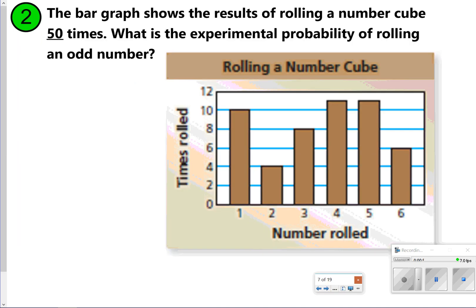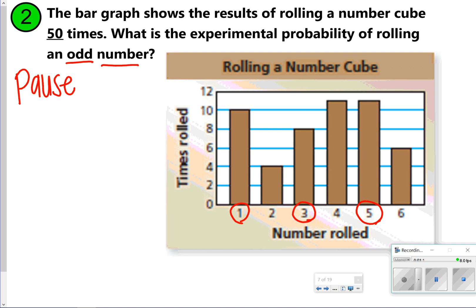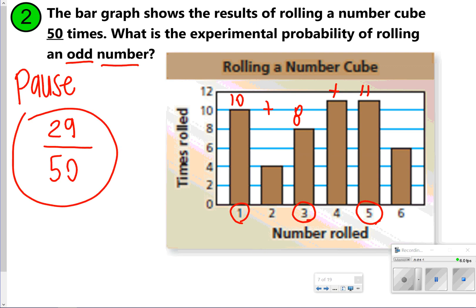The bar graph shows the results of rolling a number cube 50 times. What is the experimental probability of rolling an odd number? Focus on the odd numbers and what was the experimental probability of rolling them. To find it, figure out how many odd numbers you rolled: there were 10 times you rolled a 1, 8 times you rolled a 3, and 11 times you rolled a 5. Those added together are 29, so your experimental probability of rolling an odd number is 29 out of 50. You can't simplify that, so it stays just like that.